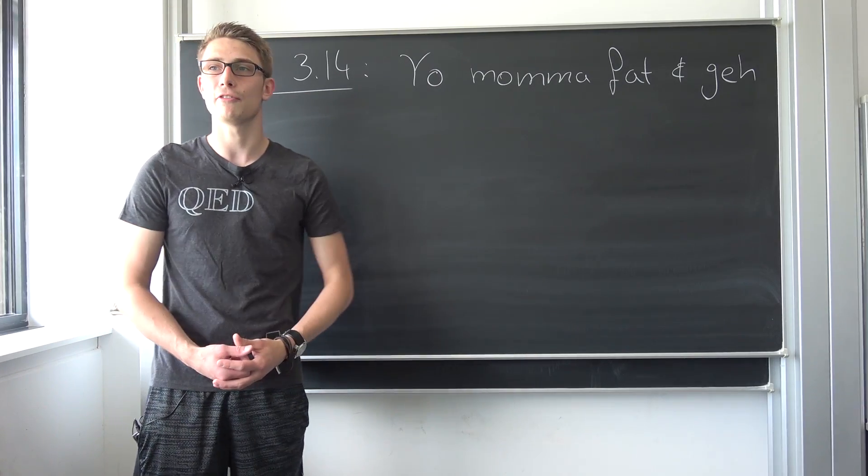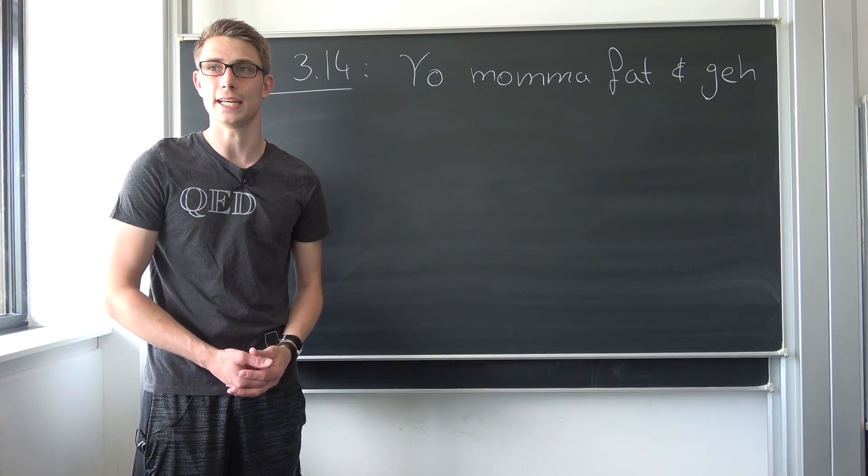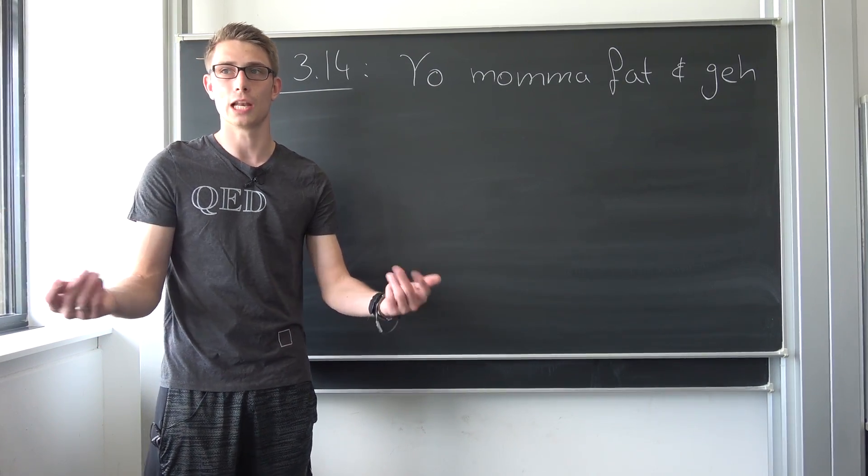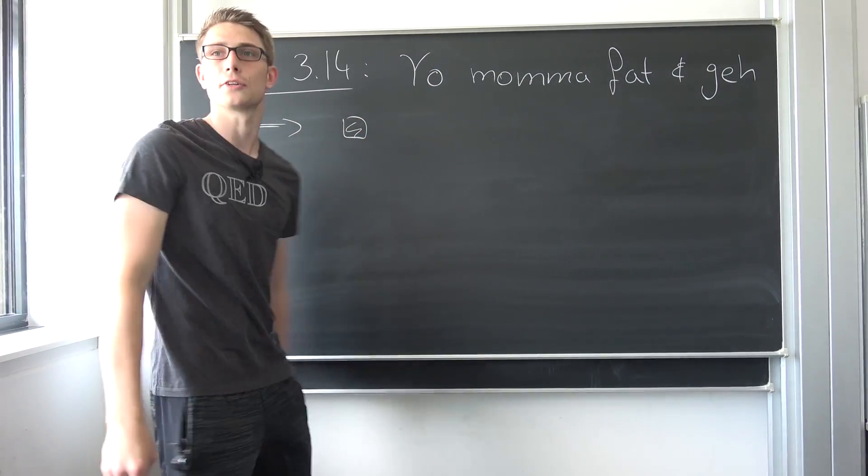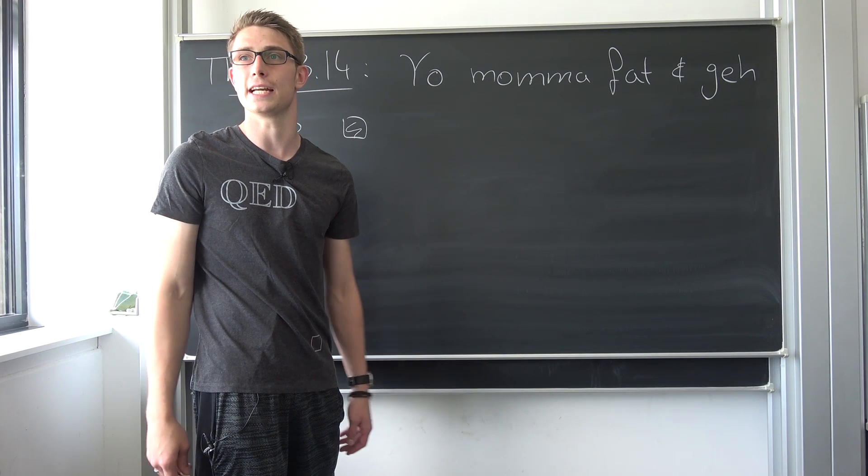this original statement is going to be true. So why not negate this statement? The negation of your mama fat and gay is your mama is not fat and gay. But that would be an absolute lie, meaning our theorem is indeed true. Okay? I would say QED on this one. That was an easy example.